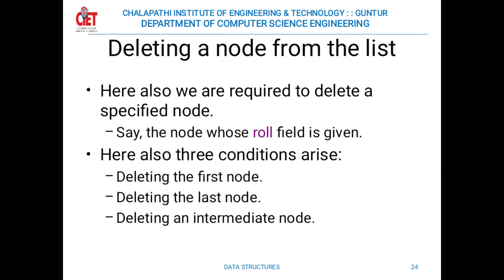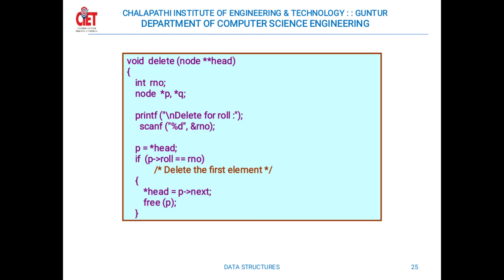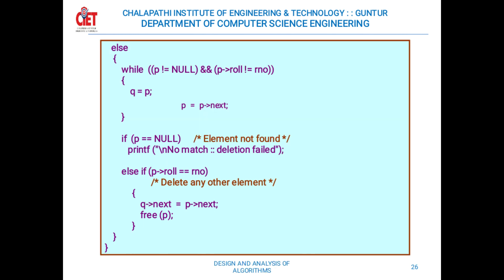To delete a node from the linked list, exchange the pointers of the previous node with the address of the next node. By doing this, the current node is removed from the list. Deletion can be performed on the first node, last node, or middle node. Pseudocodes for deletion of the first node, middle node, and deletion operations are provided.